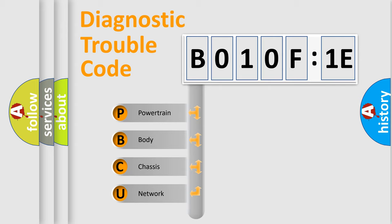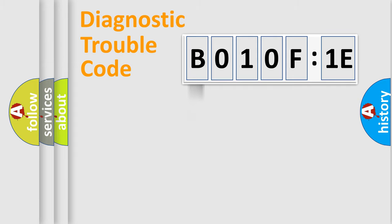We divide the electric system of the automobile into four basic units: Powertrain, Body, Chassis, and Network. This distribution is defined in the first character code.